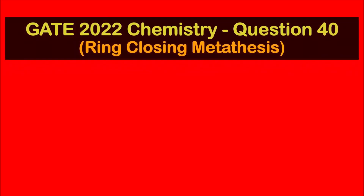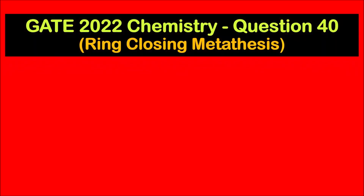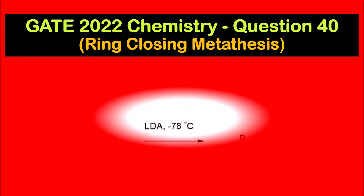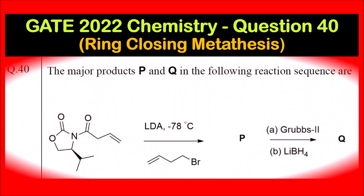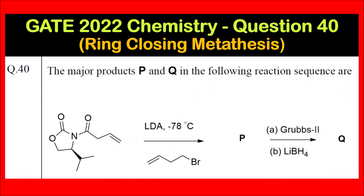Hello everyone. Welcome to Chemezon Complete Chemistry. In today's video we are going to solve question 40 of the GAY 2022 chemistry paper, which is based on ring closing metathesis, which is one of the organometallic reactions.